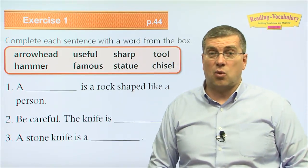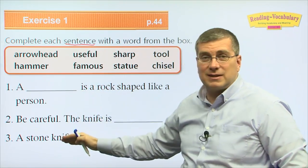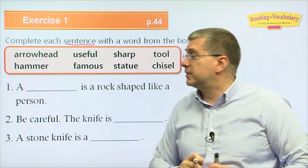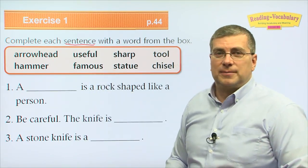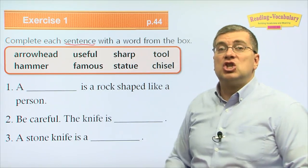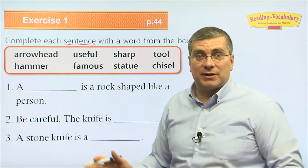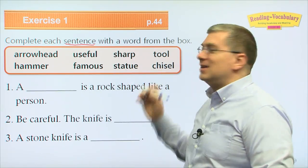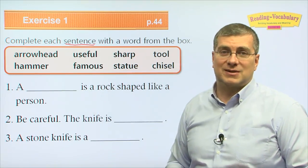Now let's look at the exercises. We want to complete each sentence with a word from the box. Let's review our words first: arrowhead, useful, sharp, tool, hammer, famous, statue, chisel.